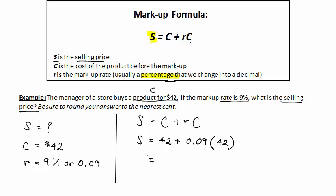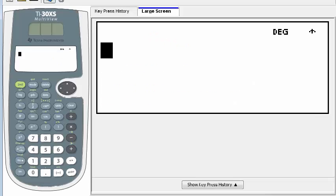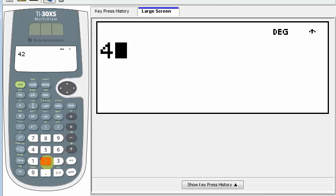So this looks like a simple calculation. And don't forget, we're going to be rounding to the nearest cent. So now we can go to our calculator and put in exactly this, 42 plus 0.09 times 42.